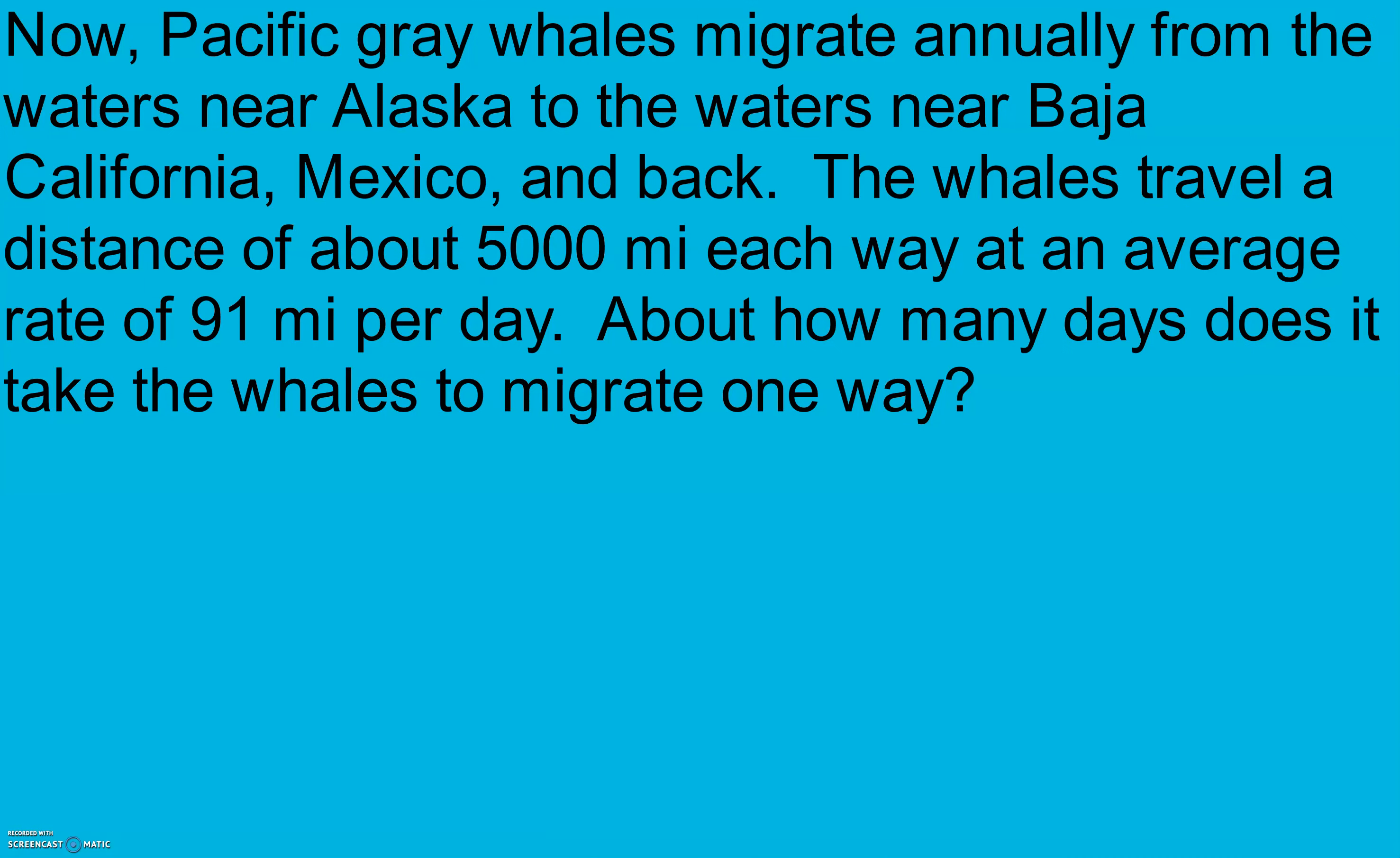Now, Pacific gray whales migrate annually from the waters near Alaska to the waters near Baja, California, Mexico, and back. The whales travel a distance of about 5,000 miles each way at an average rate of 91 miles per day. About how many days does it take the whales to migrate one way?